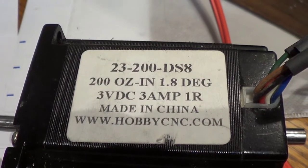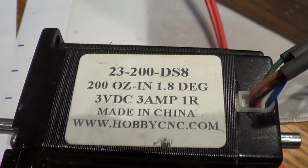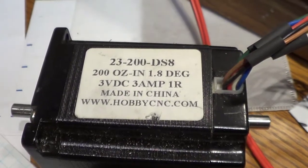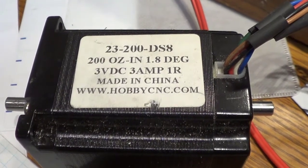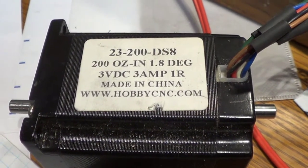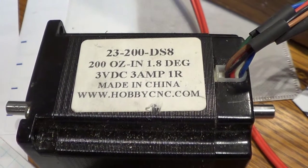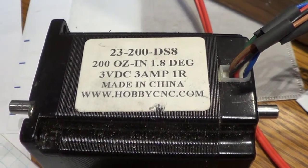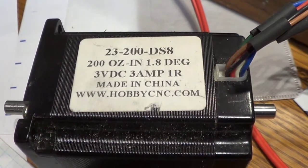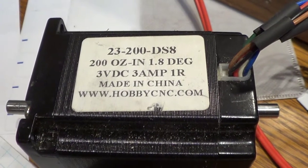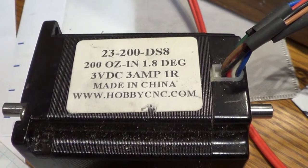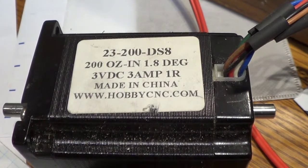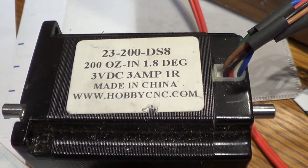This is a close-up of the 23-200-DS8 stepper motor. As you can see it's a dual shafted motor. It has eight wires on it. We have to find out which wires go to the individual coils. There's going to be four coils and then we have to figure out the phasing to make sure that we can put it into a bipolar situation. I want to make this into a parallel configuration so that we've got lots of speed.